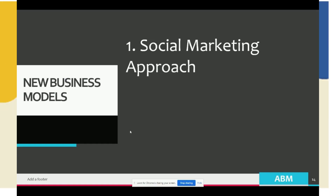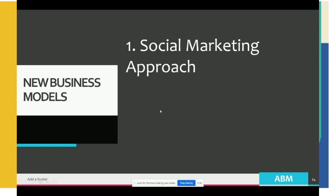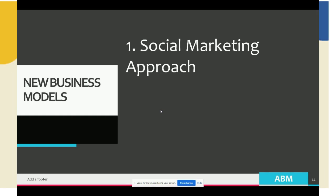Now let's move on to the new business models. The first one is the social marketing approach. Conceptualized by Cutler and Zaltman in 1970, this business model considers the societal marketing orientation, similar to basic marketing orientation, except that more emphasis is given on existing social norms and abstaining from any activities that may be detrimental to society at large.